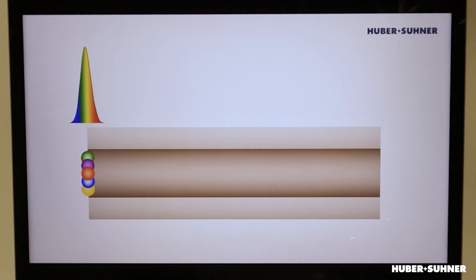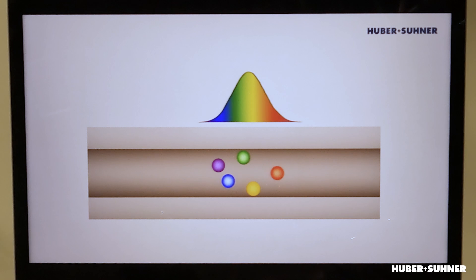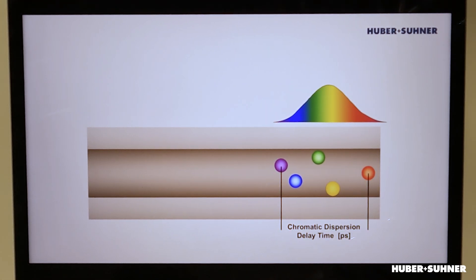Let me explain. A laser signal, spectrally speaking, is a very tight, very narrow signal, but it is not truly monochromatic. What that means is that each individual pulse actually contains multiple wavelength components. As you can see in this animation, these different wavelength components travel at different speeds, and as a result, the pulse signal starts to spread. The slower wavelength components of a pulse then start mixing with the faster wavelength components of an adjacent signal, meaning that a receiver isn't able to decode the signal anymore.